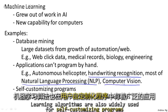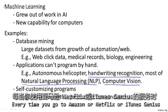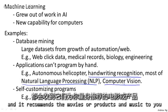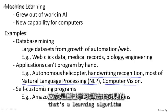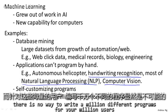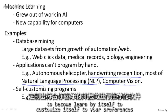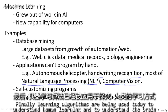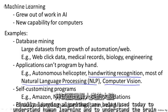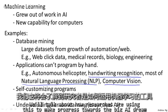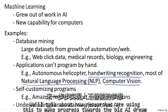Learning algorithms are also widely used for self-customizing programs. Every time you go to Amazon, Netflix, or iTunes Genius and it recommends new movies, products, or music to you, that's a learning algorithm. If you think about it, with a million users there's no way to write a million different programs. The only way to give customized recommendations is if the software can learn by itself to customize itself to your preferences. Finally, learning algorithms are being used today to understand human learning and to understand the brain, and we'll talk about how researchers are using this to make progress towards the big AI dream.